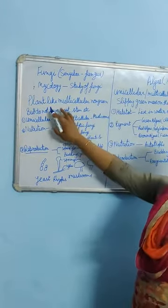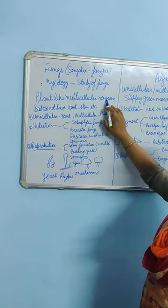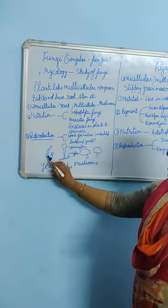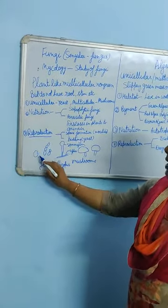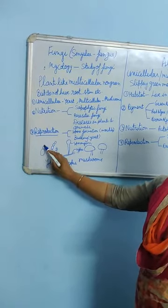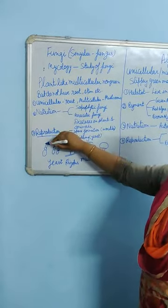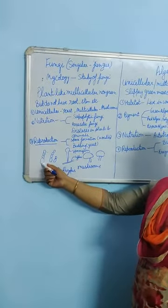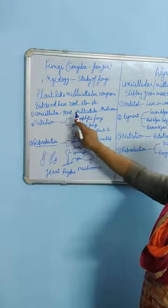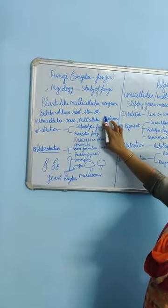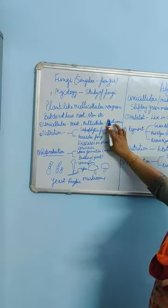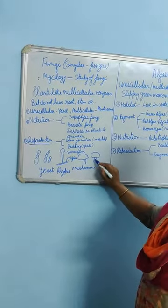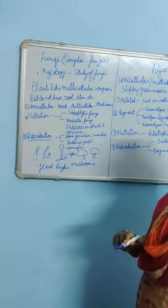All fungi are mostly multicellular. The only unicellular example among fungi is yeast. Yeast are unicellular — they have only one cell, but these cells remain attached with each other, which we will discuss in the process of reproduction. So yeast is unicellular. The rest of the fungi are multicellular, and the most common fungi you are familiar with is the mushroom, which has that umbrella-like structure with a stalk.